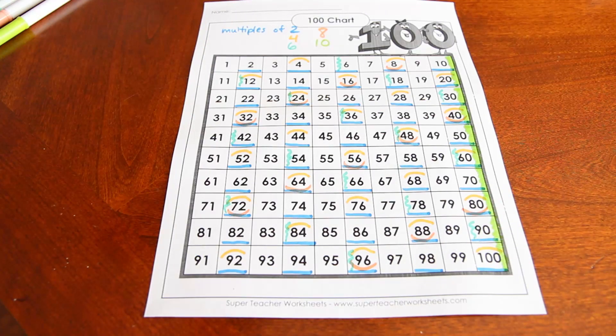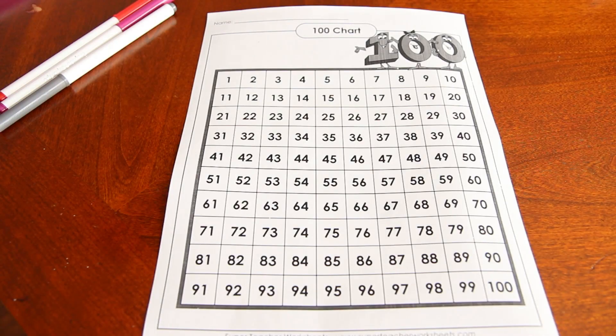So in one chart, we can see all the multiples of 2, 4, 6, 8, and 10. Now we'll do the multiples of 3, 6, 9, and 12.